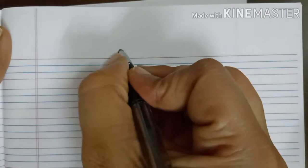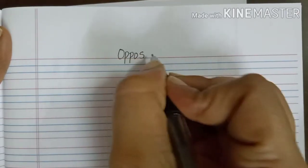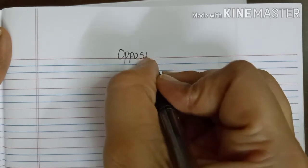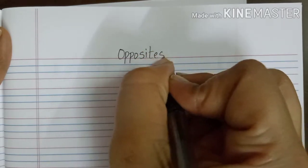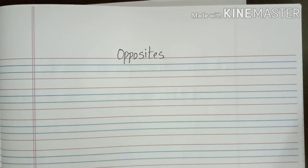Turn to the next page and put the heading as, Opposites. O-P-P-O-S-I-T-E-S, Opposites. What is the meaning of opposite children? A person or thing that is totally different from or the reverse of someone or something else are called opposites.